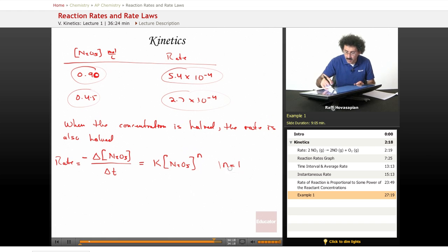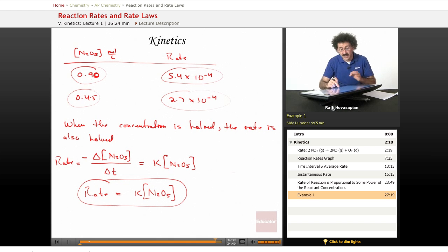So this is the rate equals some constant K times N2O5. That means the rate of this reaction, based on the data, is actually some constant K raised to the concentration of the dinitrogen pentoxide raised to the first power. This is the differential rate law.